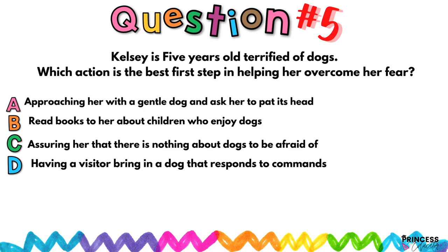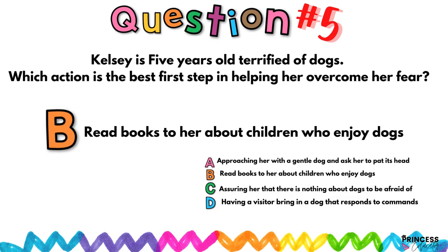Question number five: Kelsey is five years old and terrified of dogs. Which action is the best first step in helping her overcome her fear? A) Approach her with a gentle dog and ask her to pat his head; B) Read books to her about children who enjoy dogs; C) Assure her there's nothing about dogs to be afraid of; D) Have a visitor bring in a dog that responds to commands.